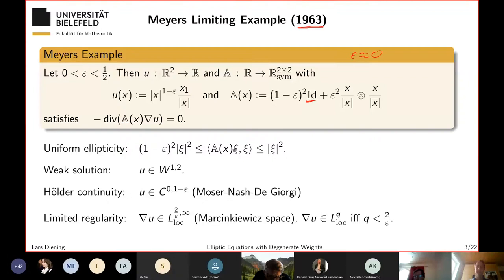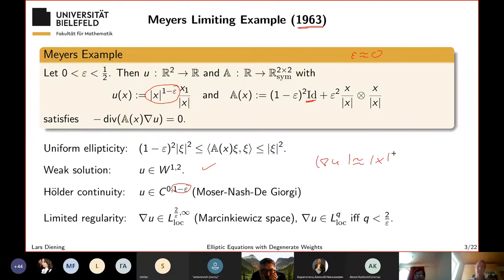This is a very nice counterexample. Since we have a uniformly elliptic weight, the corresponding energy space is a Sobolev space — we get a weak solution. You can apply Moser–Nash–De Giorgi theory to prove more smoothness. In particular, u is Hölder continuous with exponent 1−ε. More interesting for us: the gradient behaves like |x|^{−ε} near zero in certain directions, and ∇u ∈ L^q around zero exactly if q < 2/ε, or equivalently in the Marcinkiewicz space L^{2/ε, ∞}.